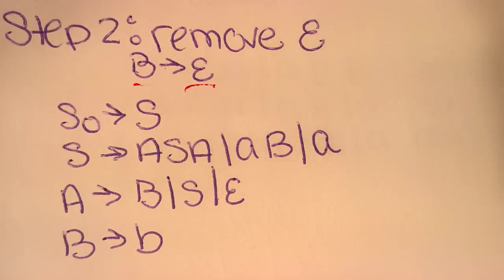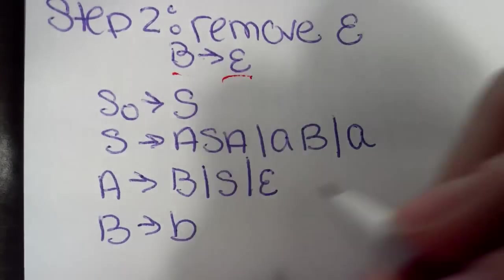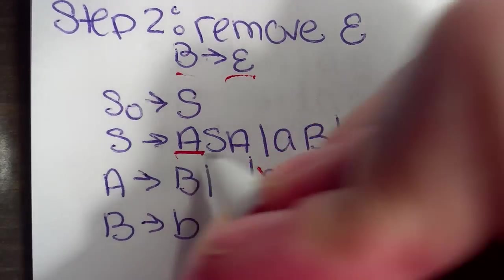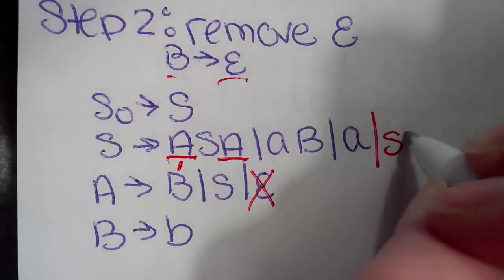Next step is to remove A points to epsilon. So as you can see here, we cross off the epsilon again and then we find each instance of A where we need to pretend it's an epsilon. So as you can see, we first have to take into account if this A is an epsilon. So that would give us an SA.